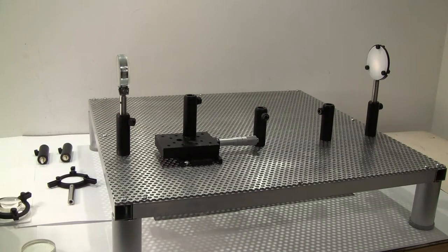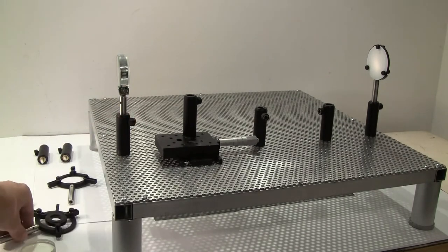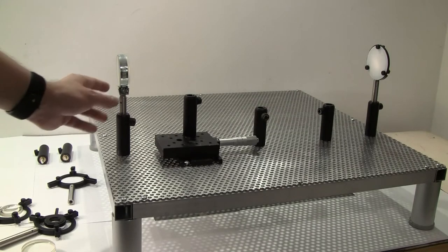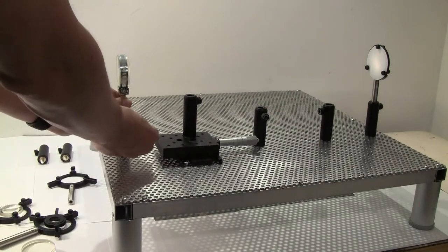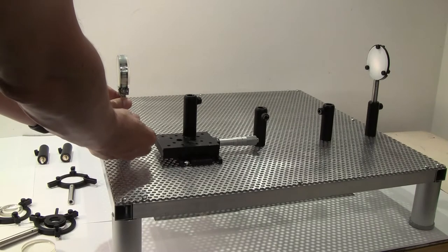And a few other little pieces like an iris diaphragm. I'm just going to show how we're going to put this together. Right now I've got a similar achromatic lens which is mounted in this post holder here.